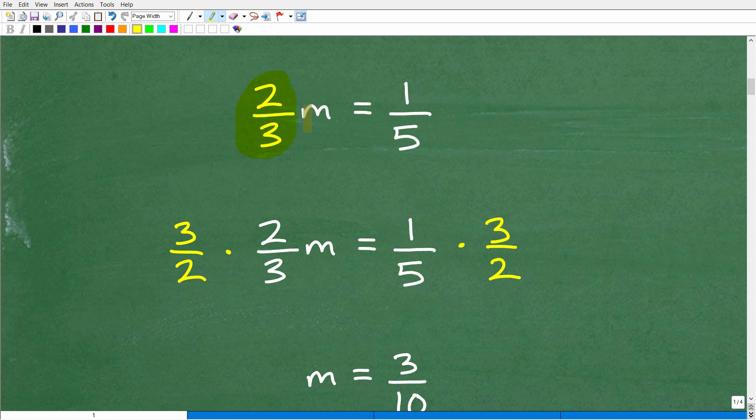So whatever is in front of the variable, of course, we're dealing with fractions here, just flip it upside down. Of course, that's called the reciprocal. So the reciprocal of two-thirds is three-halves. So we're going to multiply the left-hand side by three-halves and the right-hand side by three-halves as well. And if you do that, you will get the correct answer.